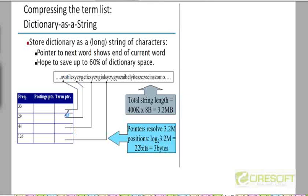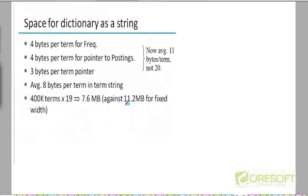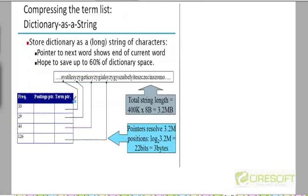These pointers were pointing to the first letter of every respective string. So instead of storing the term directly, we had a pointer pointing to the location of that term in this global string. We saw that this kind of solution ends up cutting down the size of the dictionary from about 11.2 megabytes to about 7.6 megabytes, without affecting performance in terms of the speed with which we can answer a query or look up a term in the dictionary.